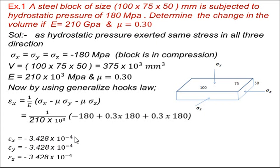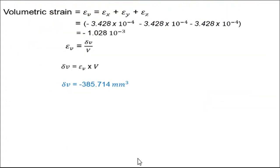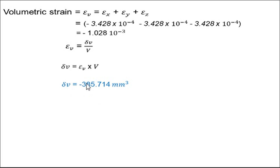This is the strain in only the x direction. Since stresses applied in all three directions are the same, the strain produced in all three directions is also the same. The volumetric strain epsilon v is the sum of strains in all three directions, giving the total strain. Since epsilon v equals change in volume divided by total volume, the change in volume equals epsilon v multiplied by V. Putting in the values gives a change in volume of minus 385.714 mm³.